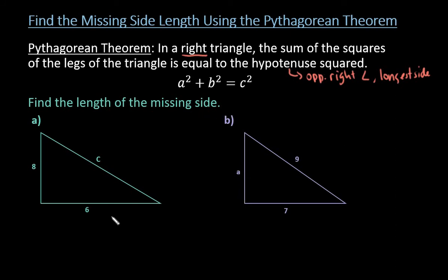So what we have here in our first one, we are missing our hypotenuse, so we need to find C in this one.